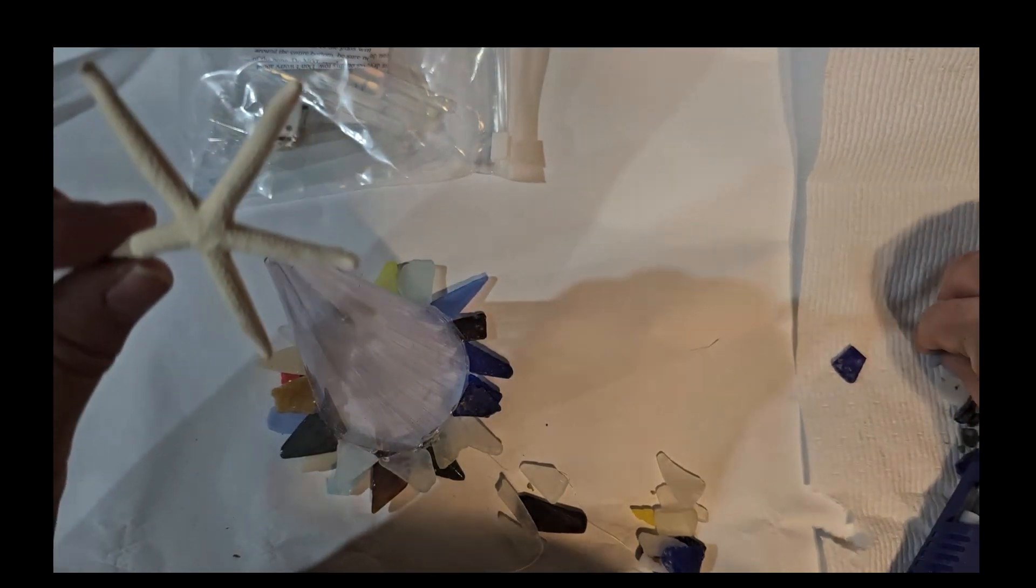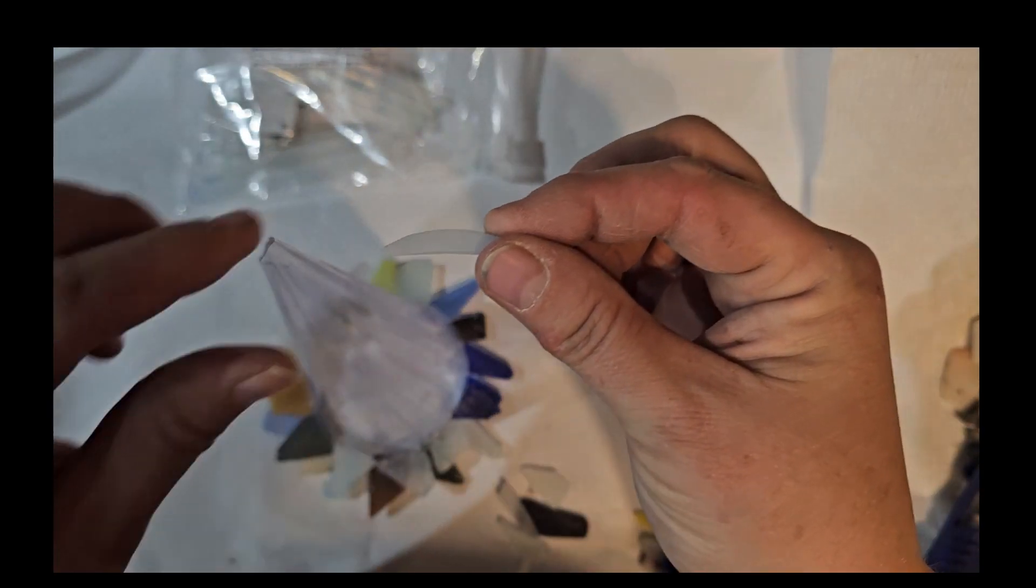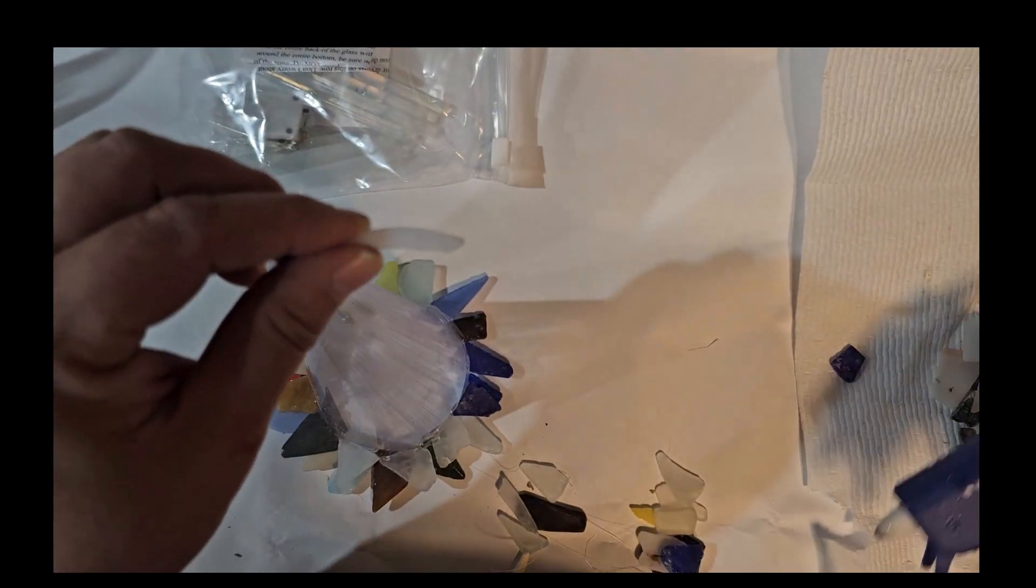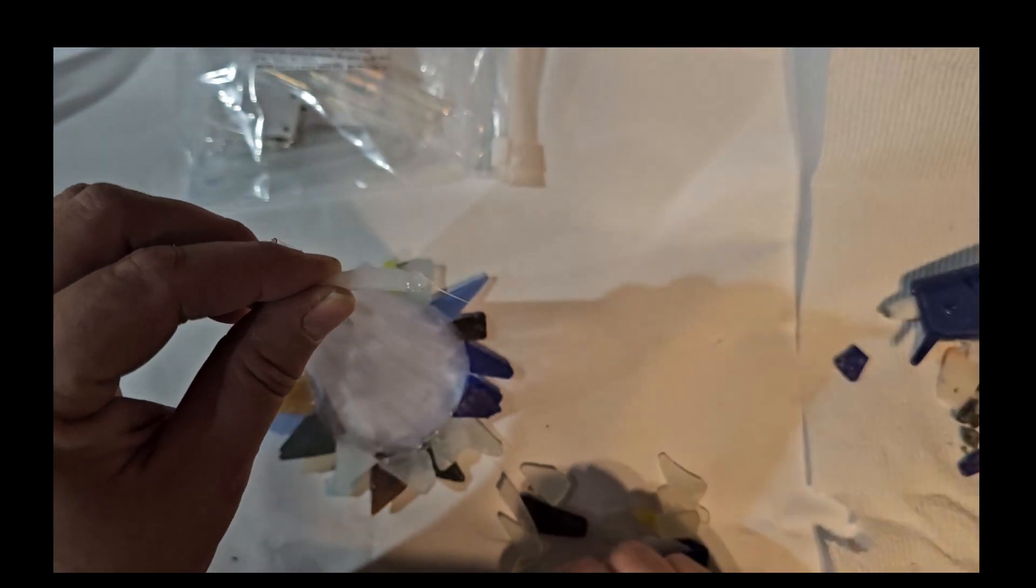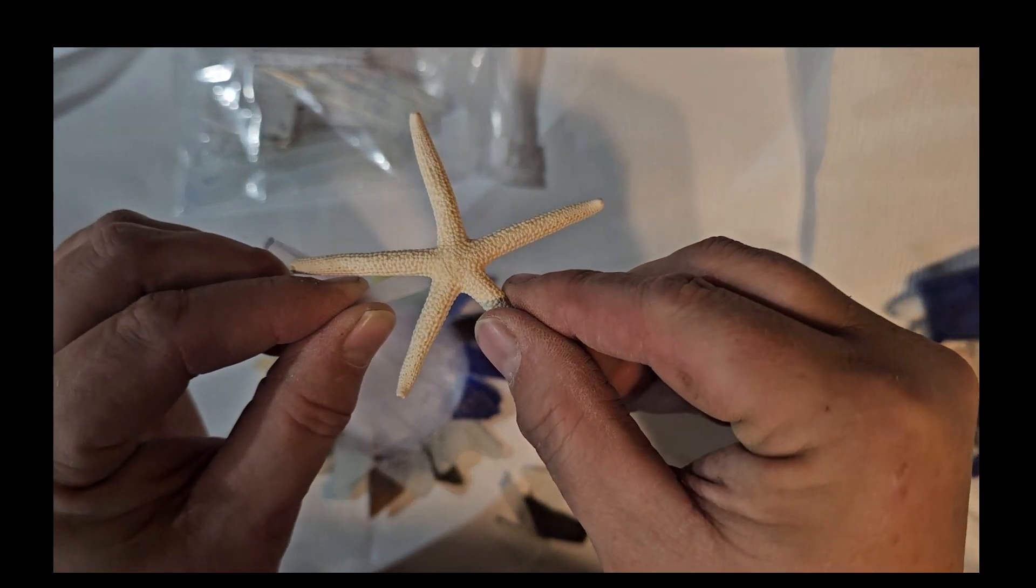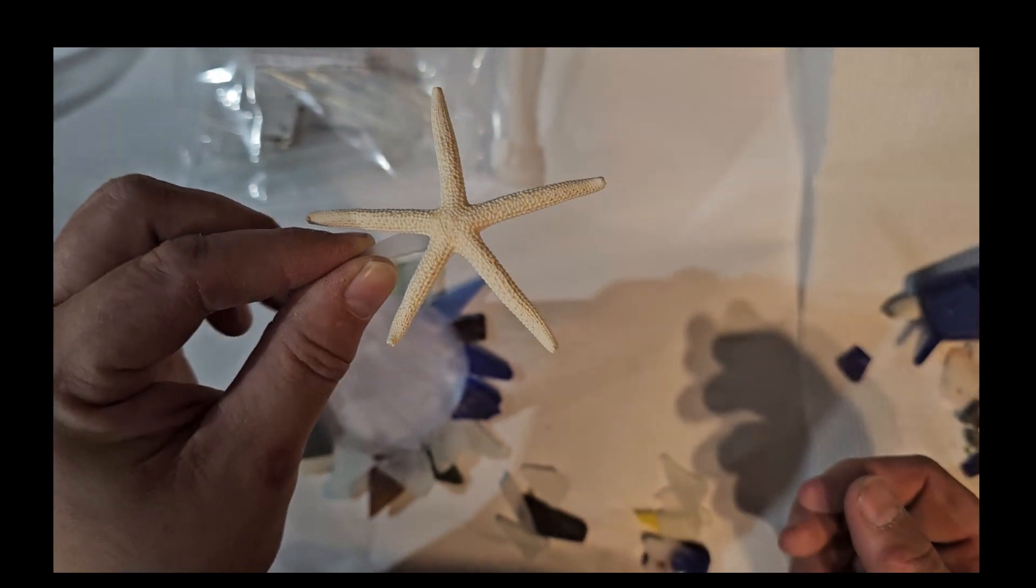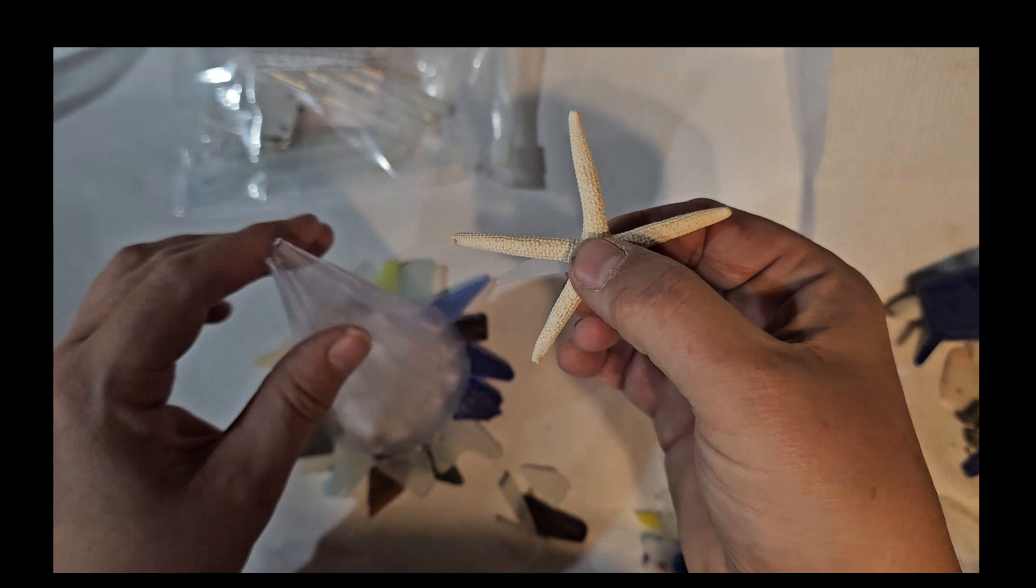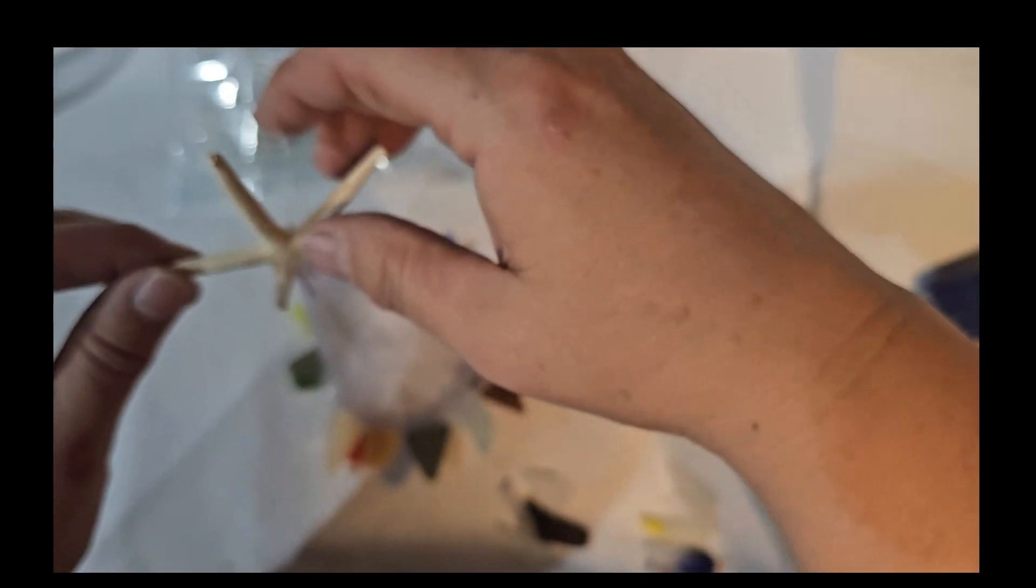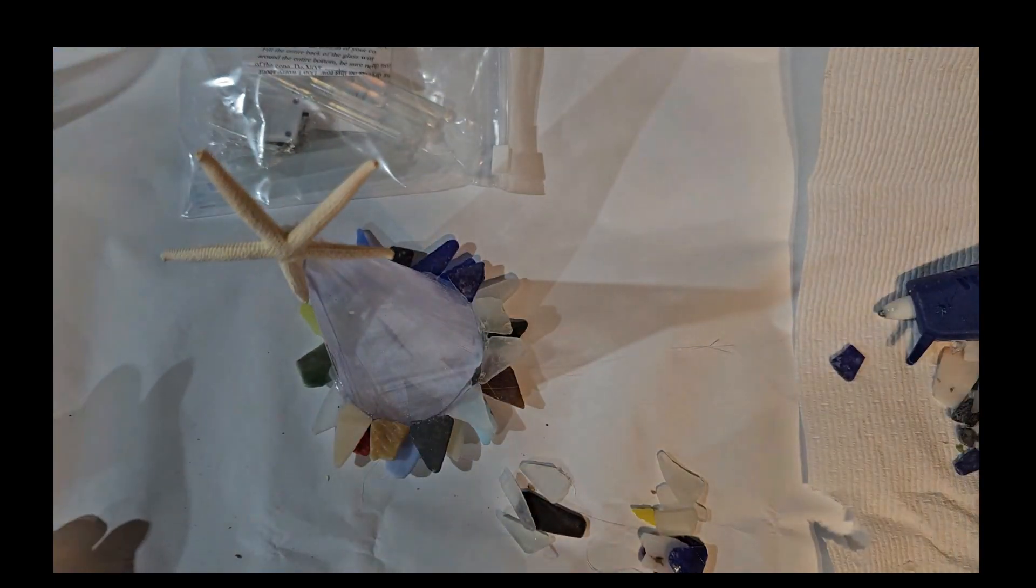For the starfish what you are going to do is find a piece of glass very similar to this. You are going to place a dollop of glue at the top and then attach your starfish to that. It will look very similar to this. You will then take this and stick it in the top of your tree.